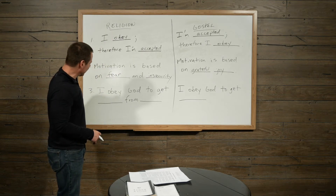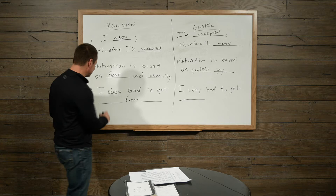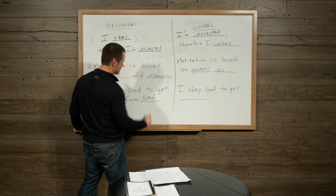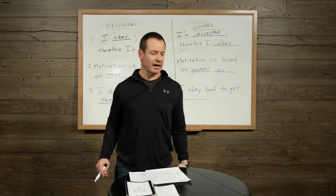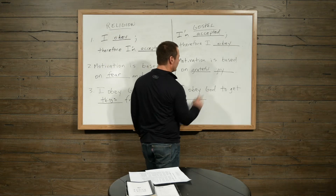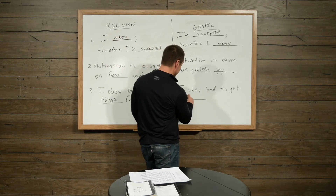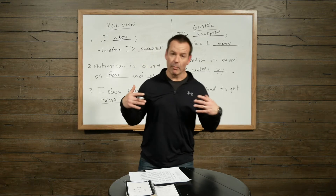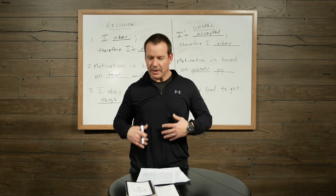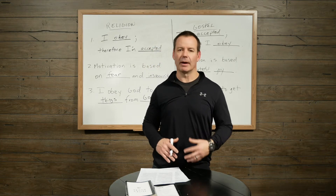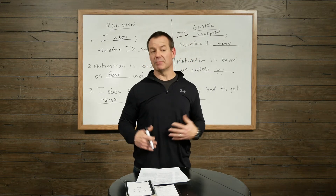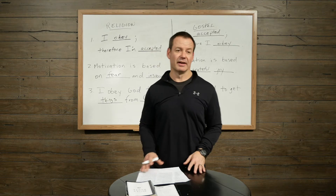Third contrast: in religion, I obey God to get things from God — kind of the great vending machine in the sky. Contrast this with the gospel that says I obey God to get God. I want more of him — not just things from him, but I want to delight in him, resemble him, please him — not just to be accepted by him, but really out of love and out of gratitude.